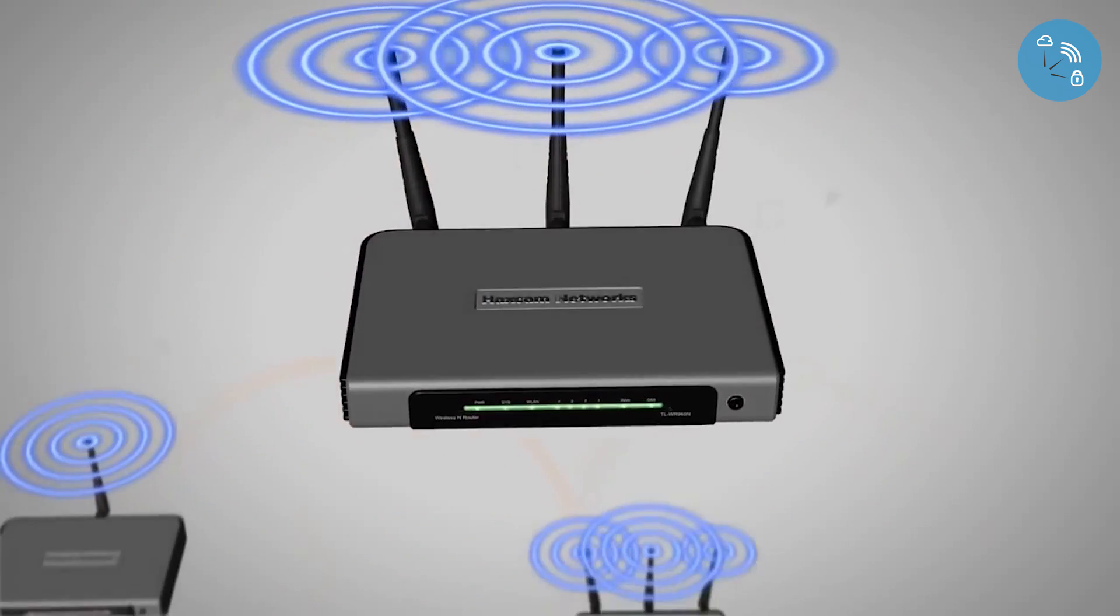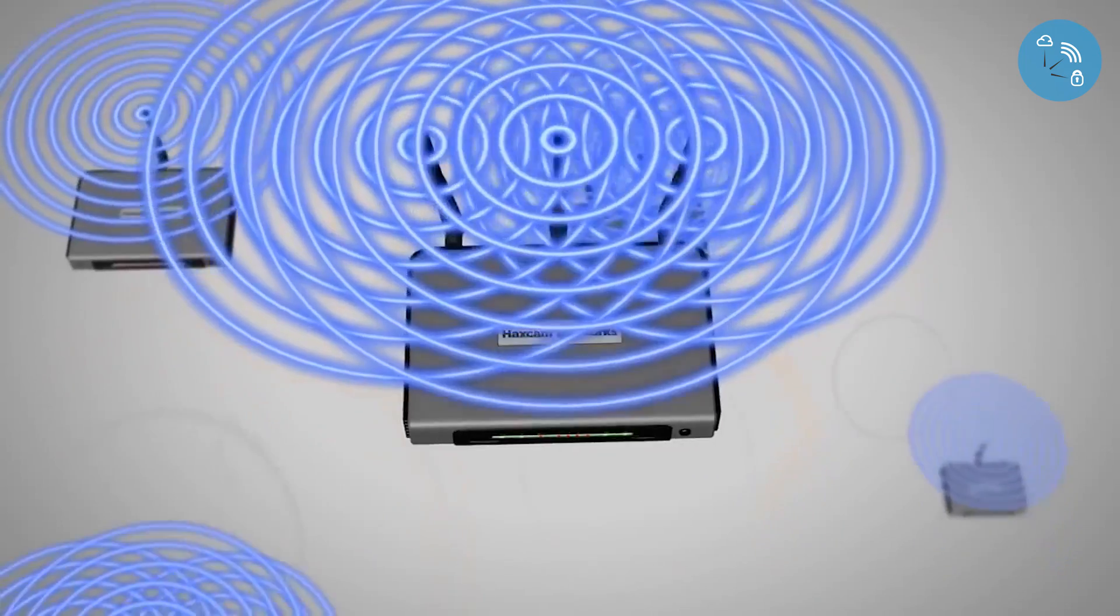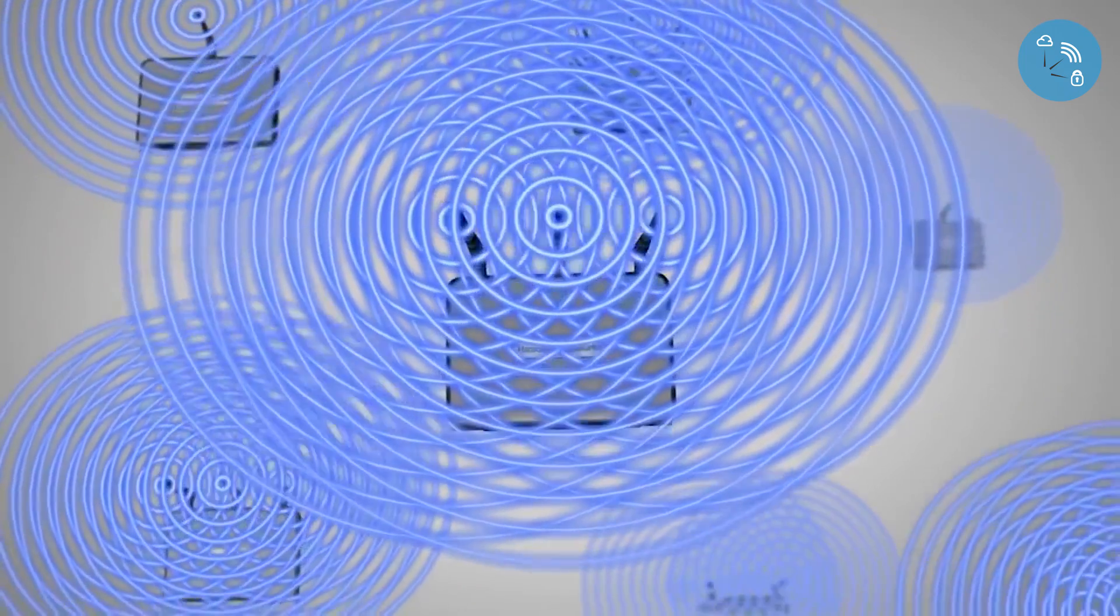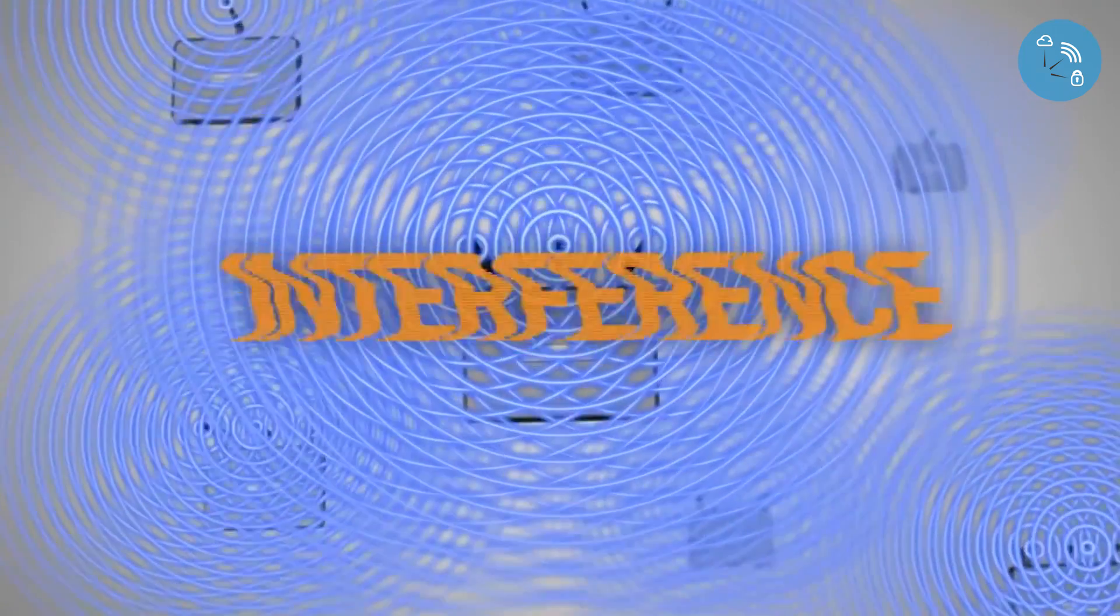Traditional Wi-Fi access points flood transmissions in all directions. Signal that goes anywhere except to the intended receiver is just interference.